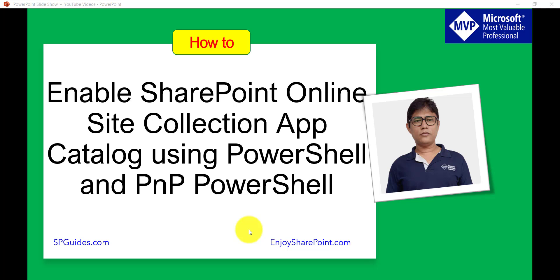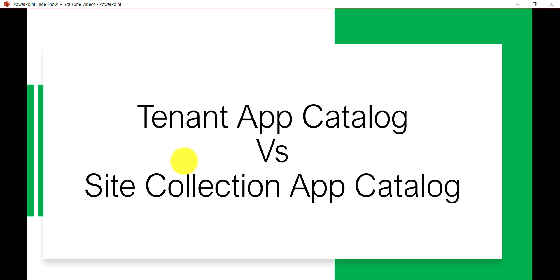Today we will discuss about the site collection app catalog. There are two kinds of app catalog that we can create. One is at the tenant level, which is created from the SharePoint Online Admin Center. The other one can be enabled at the site collection level through PowerShell or PNP PowerShell. There is no UI or interface for this — you have to use PNP PowerShell or PowerShell.